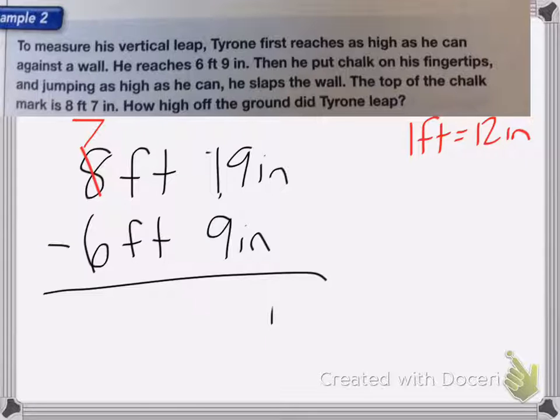So I'm left with seven feet, 19 inches. 19 minus nine is 10. So 10 inches and seven minus six is one. So he could jump one foot, 10 inches high.